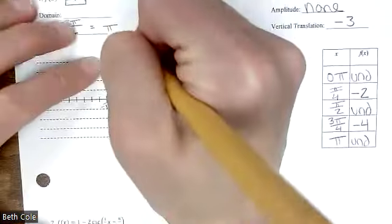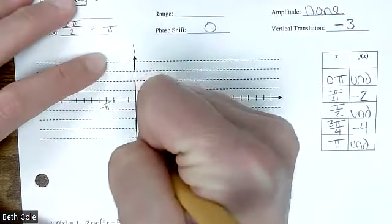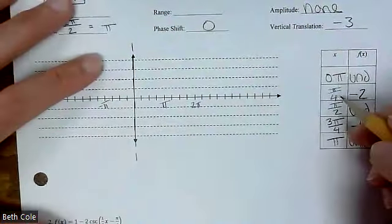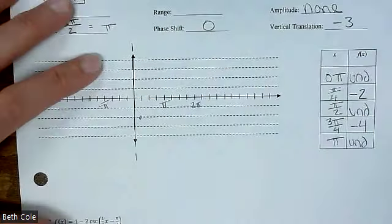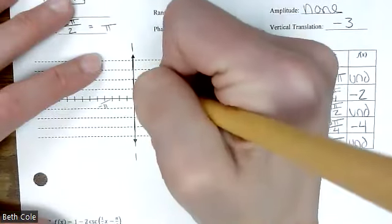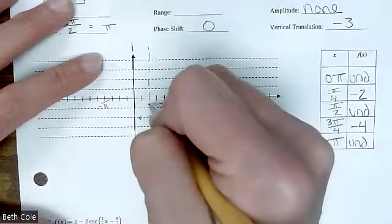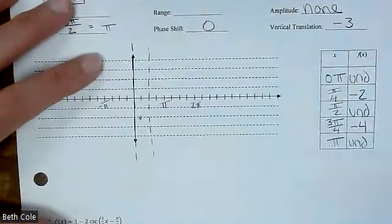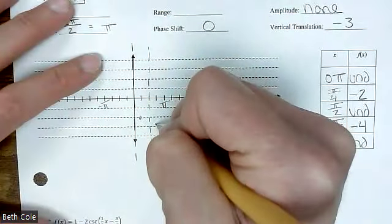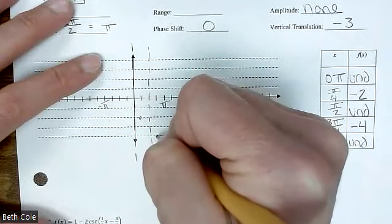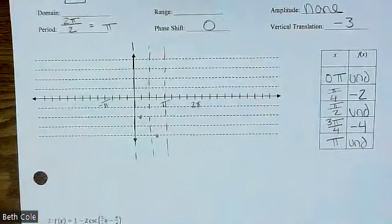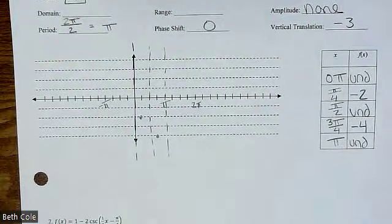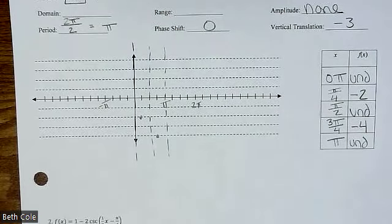At zero pi we have an asymptote — I know that's always hard to draw on the axes. At pi over four we're at negative two. Then another asymptote, then negative four, two, four, and then another asymptote. I want you to continue it for one more cycle to show me you can keep the pattern going — same as we did for sine.